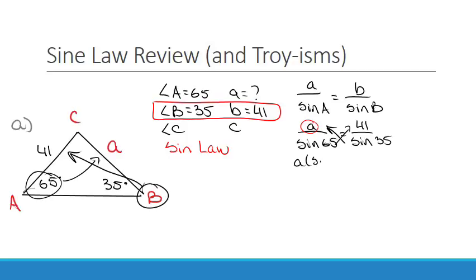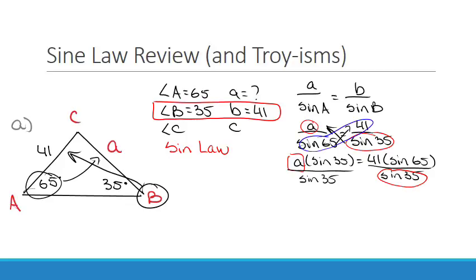So here's my cross multiplication. So I'd have A times sine 35 equals 41 times sine 65. And then I want to get the A by itself, so then that means I have to divide the sine 35 out. And if you look, sine 35 began in the denominator of the second fraction, and I moved it and then brought it right back to the denominator in the second fraction. So I can skip that step.